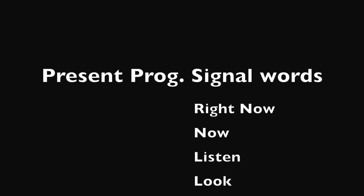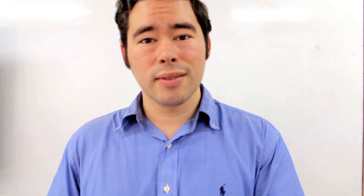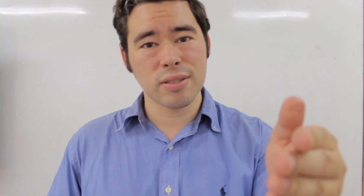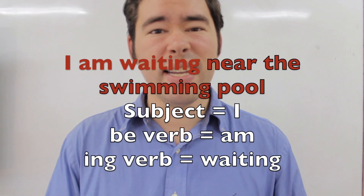Some signal words might include: right now, now, listen, look, just now, at the moment, or at this moment. So back to the example: your contact is in the hotel room talking to you on the phone and you are down at the swimming pool. How can you tell him where to meet? You use present progressive tense: I am waiting near the swimming pool.